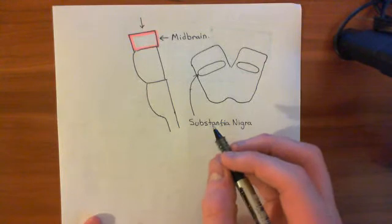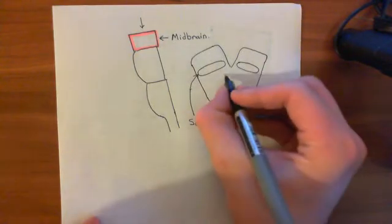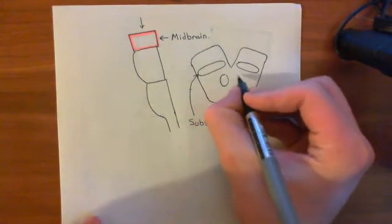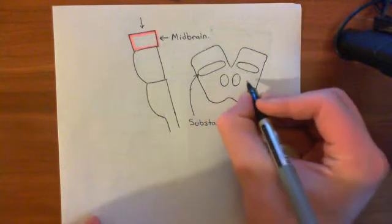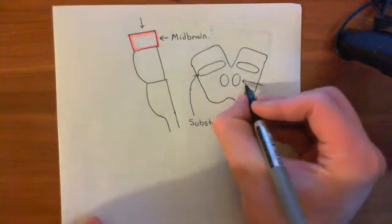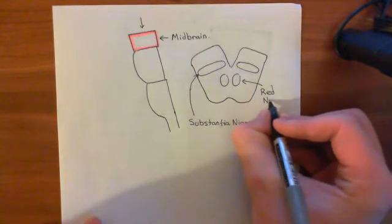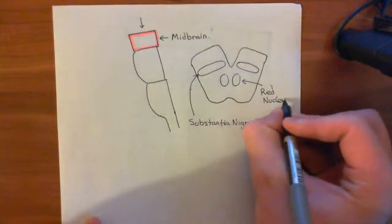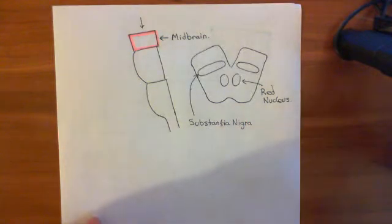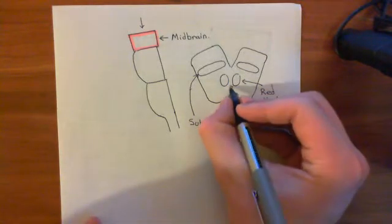Other structures of the midbrain then. You have two structures here which look like the eyes of Mickey Mouse. And these are what are known as the red nuclei. They're quite important in the motor system. They're important in relaying information from the cerebellum to the cerebral cortexes. And since the cerebellum is very important in motor calibration, these are very important for that.